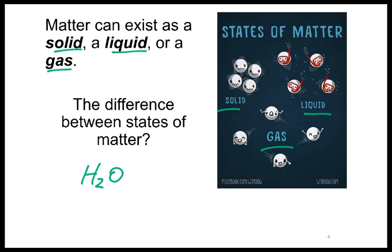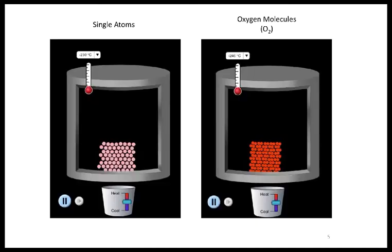Well, to illustrate this for you, I've got a couple of animations. On the left, we have single atoms of one kind or another inside a sealed container. And we have the ability to change the amount of heat that is being added to the sample inside the container. On the right, we have oxygen molecules, which are two oxygen atoms that are bound to one another. And we also have the same set of controls. So let's see what happens.